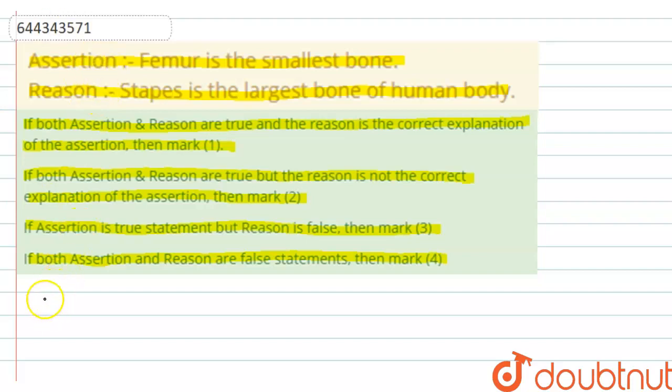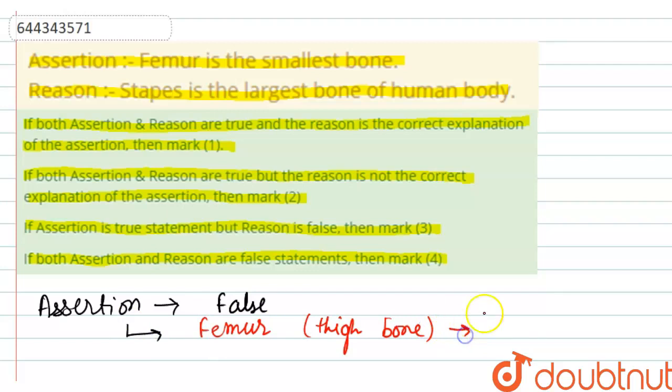If we see the assertion, it is saying that femur is the smallest bone, so it is wrong because femur is the thigh bone and it is the longest and largest bone. So this assertion will be false.